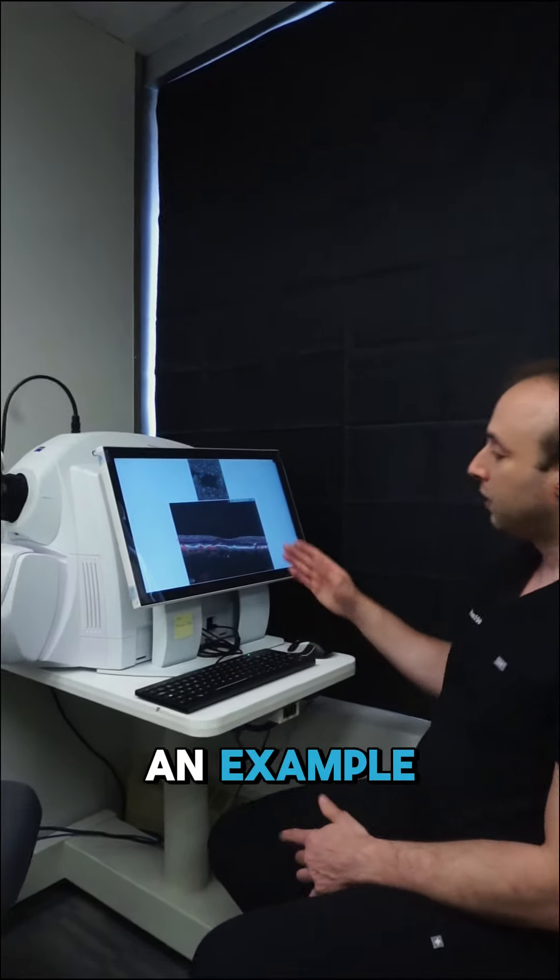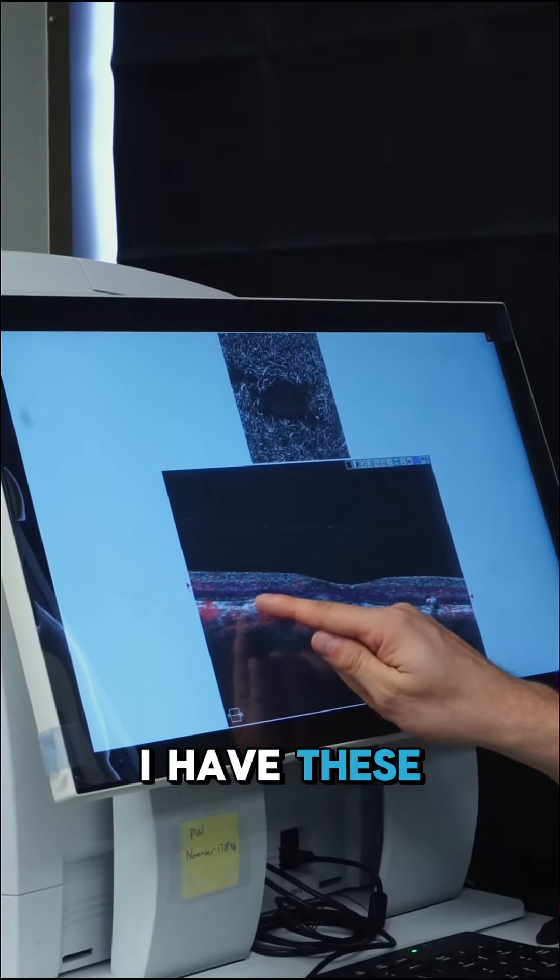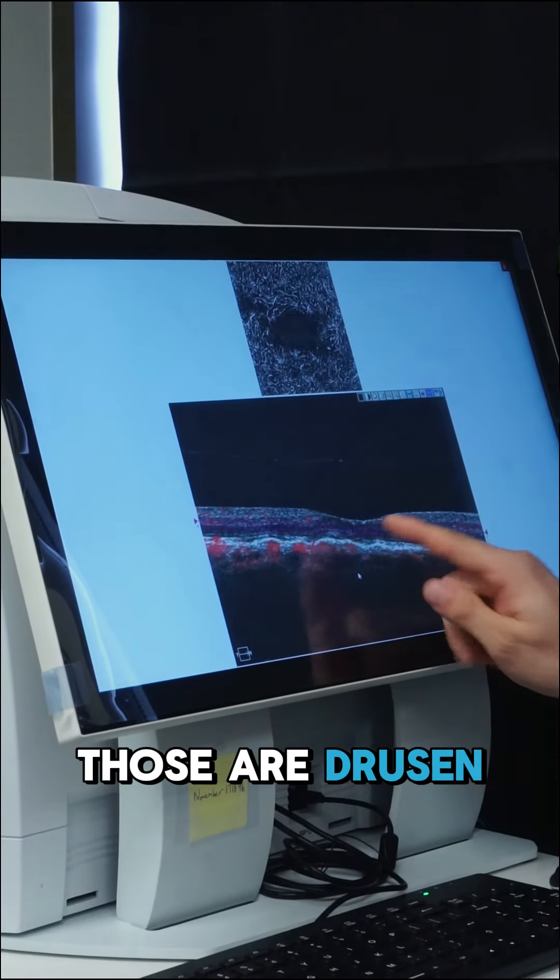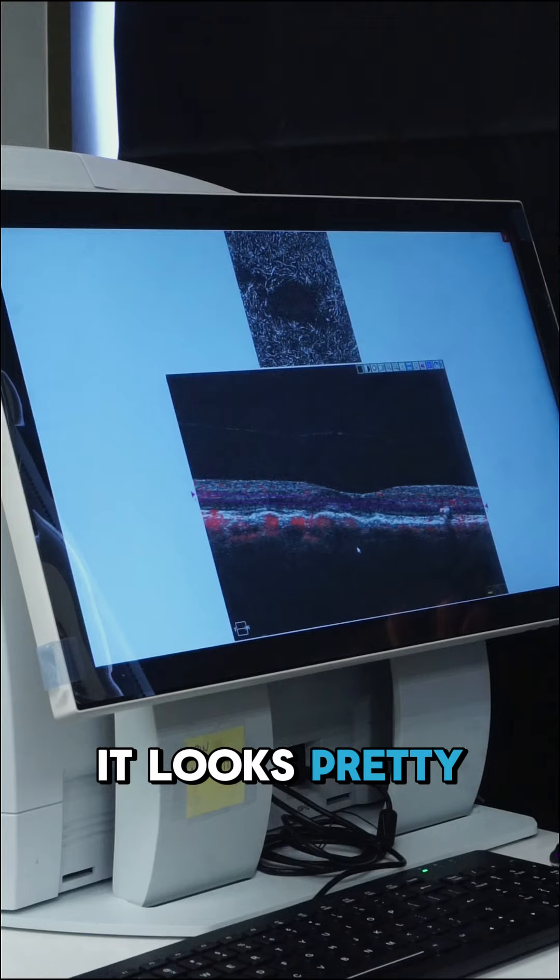I'm going to show you an example. This is the macula. I have these little bumps here. Those are drusen. However, I don't see it. It looks pretty normal to me.